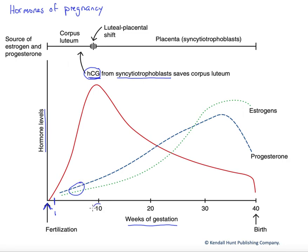That corpus luteum will be maintained for about 10 weeks, and then we're going to get this luteal-placental shift, where our progesterone and estrogen are going to start to come more so from the placenta than from the corpus luteum. The placenta is growing and producing these same hormones, maintaining the pregnancy through high progesterone and more moderate estrogen levels.